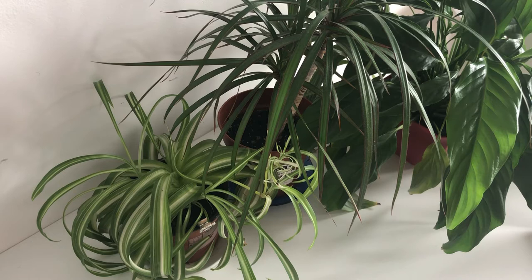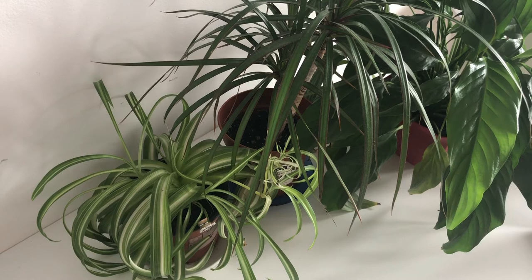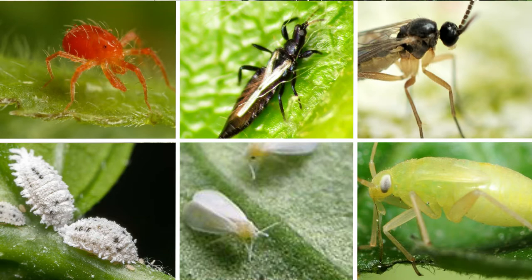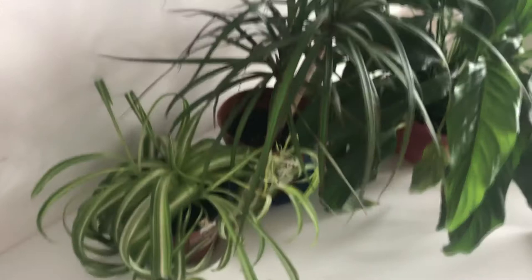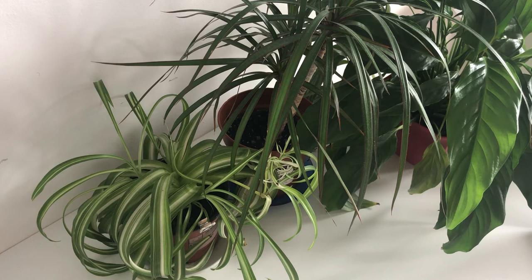First of all, where did they come from? There is no simple answer to this question. Plant pests can spread from one plant to other nearby plants. They can also be transported via clothing and gardening tools, and even through the air. In most instances they are already on the plant at the time of purchase, but in such low numbers that they are invisible to the naked eye. They can stay that way for years and then suddenly start reproducing madly when the environment is favorable for them.